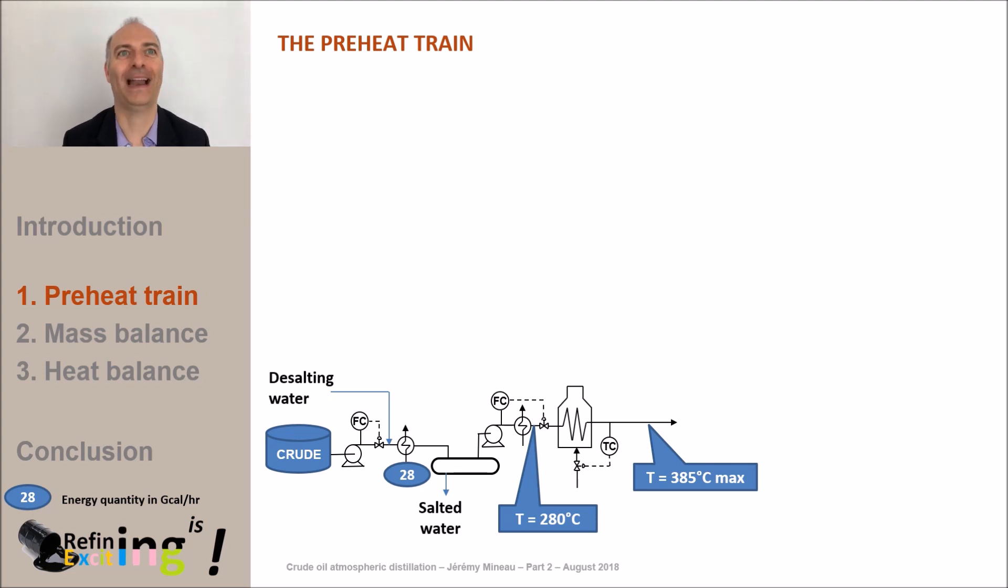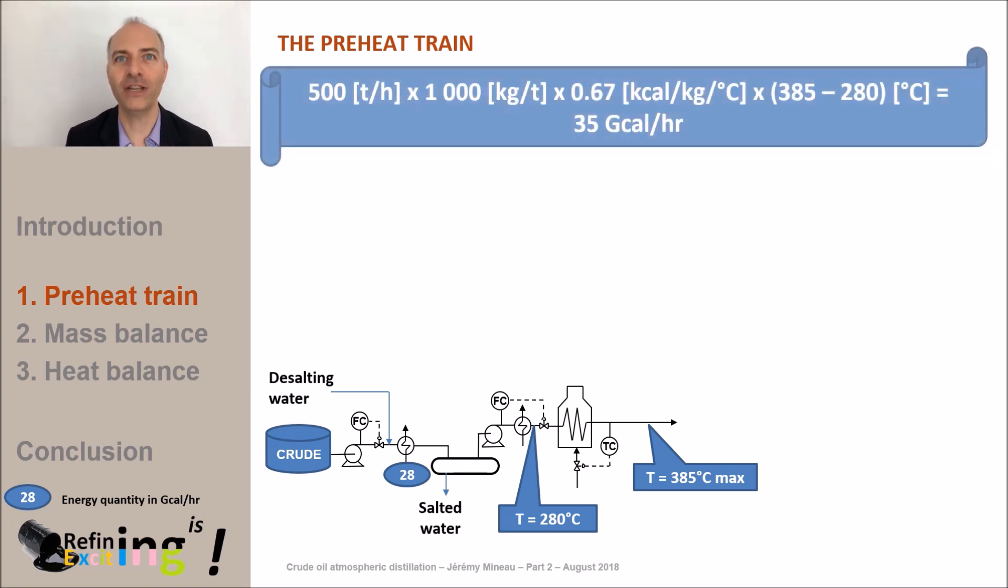As before, let's do a heat balance. To heat 500 tons per hour of crude from 280 to 385 degrees C, it will require about 35 gigacalories per hour. But be careful, this energy is certainly necessary but not sufficient. Why? Simply because, as just said before, when the crude is heated up to 385 degrees C, it will also vaporize.